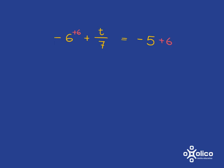So what we're going to have on the left, the negative 6 plus 6 is going to just give us 0, and we'll have t over 7. Negative 5 plus 6, we know that that's going to end up as positive, and it's going to be positive 1. Negative 5 going up 6 steps ends us up at 1.